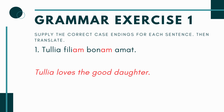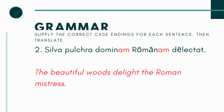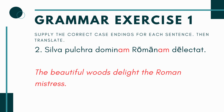Number one says: Tulia, filia blank, bona blank, amat. The way you unpack this is to look at the different endings. You already have Tulia, which is a nominative singular ending, so that's my subject. Tulia amat — she loves. Since I already have a subject, I'm not looking for another one; I'm looking for a direct object. What does she love? It would be filiam bonam amat — she loves the good daughter. That's the only thing that makes sense here.